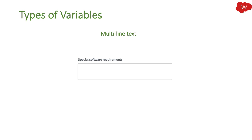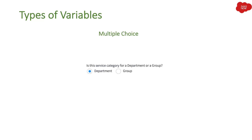Then we have Multi-line Text. If you want users to input a lot of details — a longer description — you can select the Multi-line Text variable. Then we have Multiple Choices, which also displays as radio buttons. If you want to show users several choices, you can select this variable type, which is called Multiple Choice.